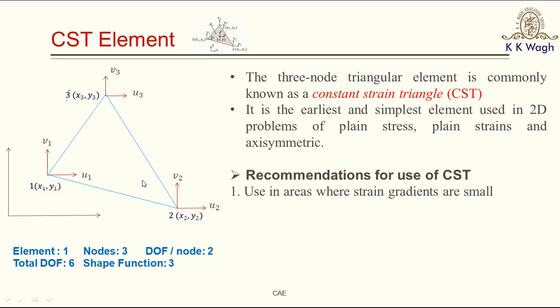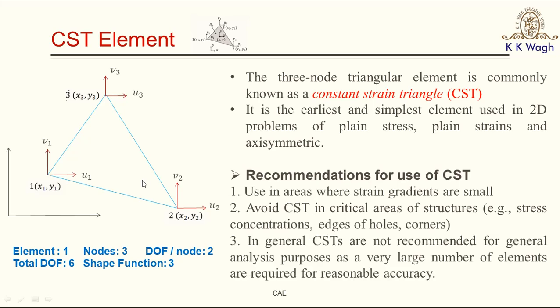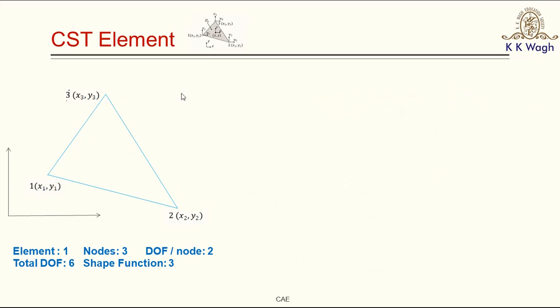We can't use this element where stress concentration occurs, that is at the edges of holes and at corners. In general, the CST element is not recommended for general analysis as a very large number of elements are required to achieve the desired accuracy. For this CST element, using FEA techniques we will get the properties at node number 1, 2, and 3.